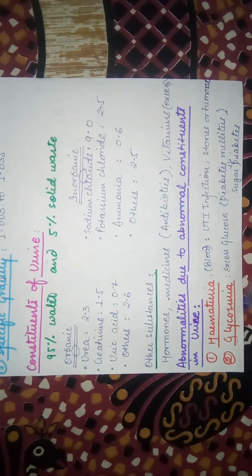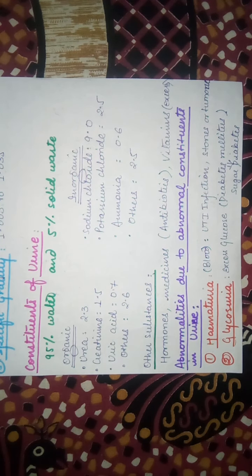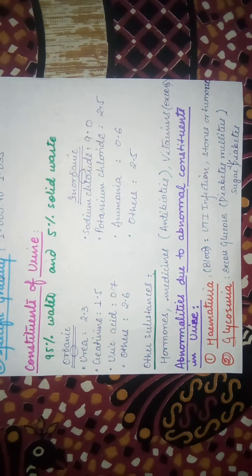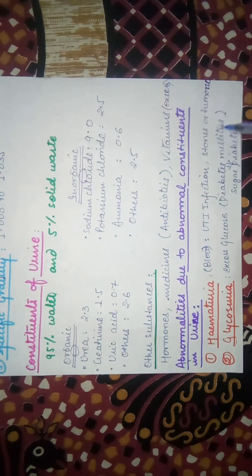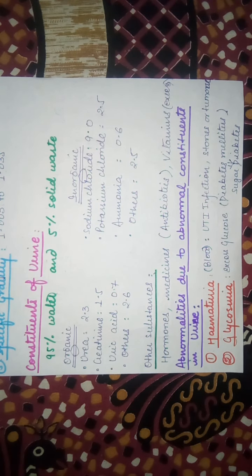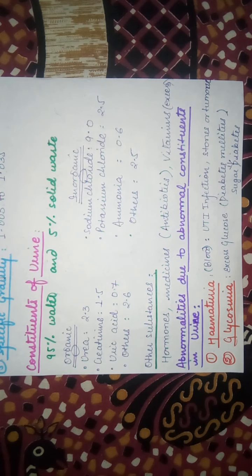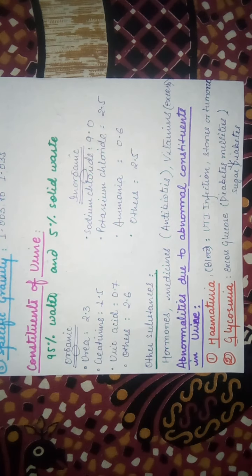Next is glycosuria. Glyco means glucose and uria means urine. You can see glucose levels in urine. That means the disease is diabetes mellitus, which is also called sugar diabetes. The increment of glucose in human blood will ultimately lead to the increment of glucose in urine. That disease is called glycosuria.